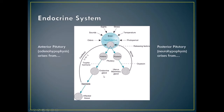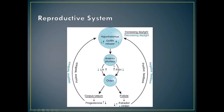The endocrine gland releases hormones that affect other tissues, and we have feedback coming back to the hypothalamus, which changes what it's telling the anterior or posterior pituitary glands to do.